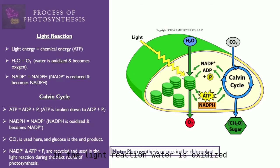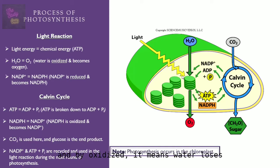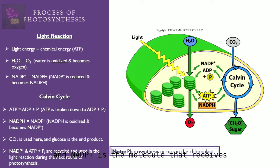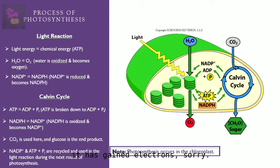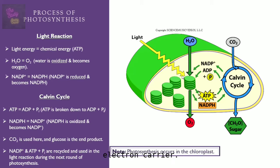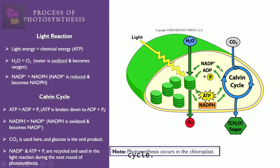In the light reaction, water is oxidized, becoming oxygen — and by oxidized, that means water loses electrons. Those electrons are then transferred to NADP+, which is the molecule that receives the electrons from water and becomes NADPH. Thus NADP+ has been reduced, meaning it has gained electrons. NADP+ is known as an electron carrier.